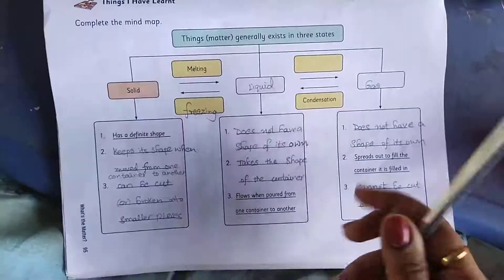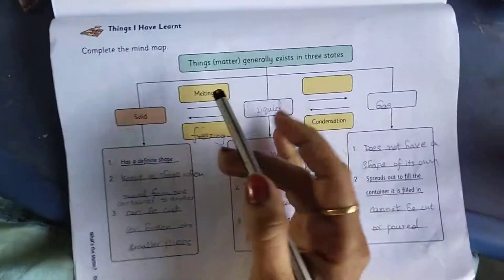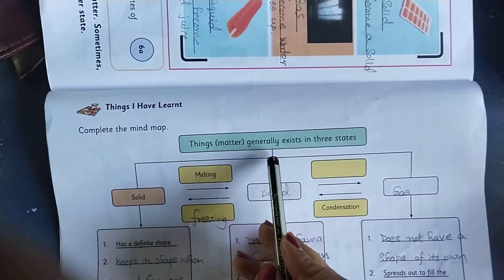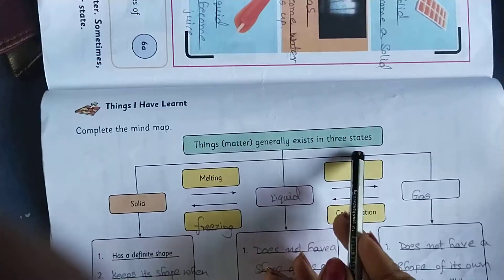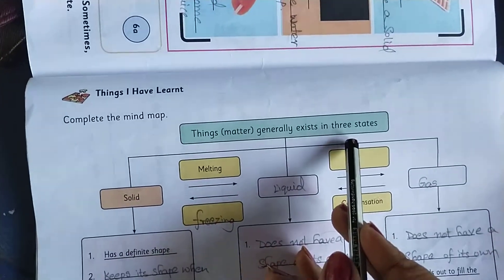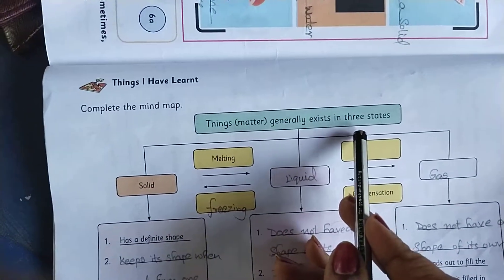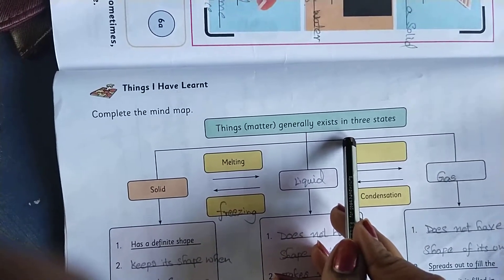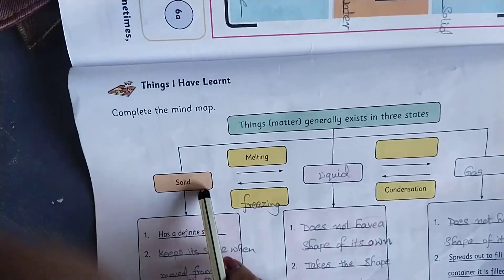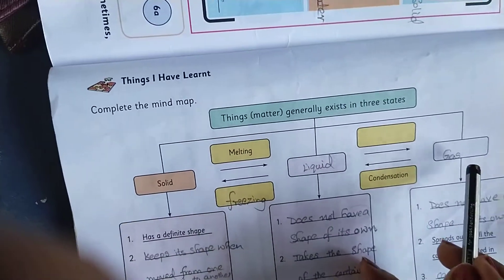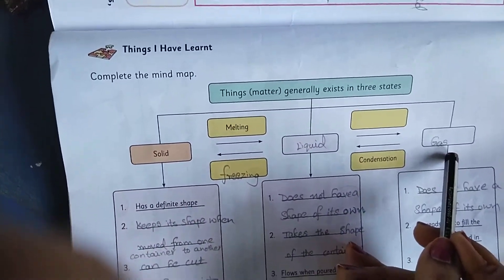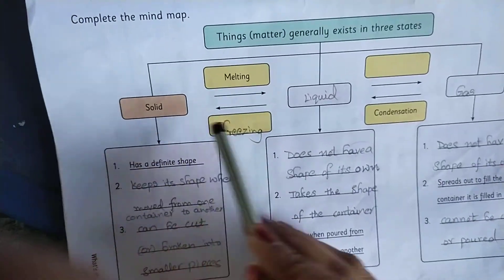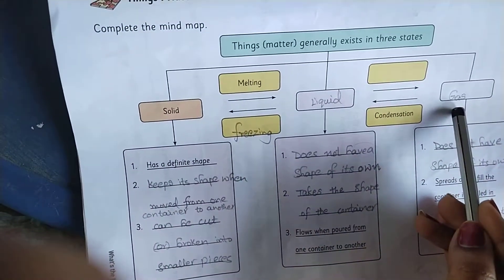See children, here things — matter generally exists in three states. Already I explained. So matter is divided into three states: solids, liquids, and gases. What are the three states? Solids, liquids, and gases.